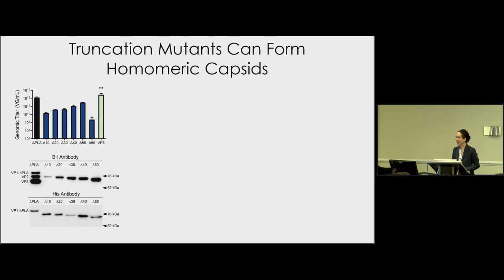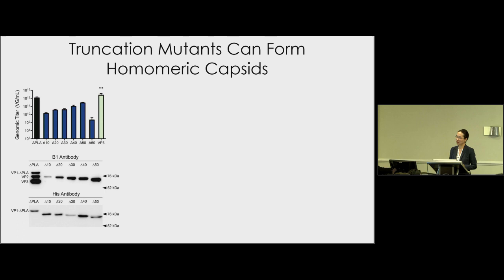The del-60 mutant — where the first 60 amino acids have been cut off — showed a big drop in vector production. When we looked at the assembly activating protein sequence, expressed in an alternative open reading frame of the AAV capsid gene, we realized the mutagenesis introduced a stop codon in AAP, which explains the hit in vector production. The blots demonstrate that we do have homoameric capsids of single subunit composition, and we do have his-tags.